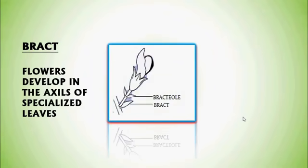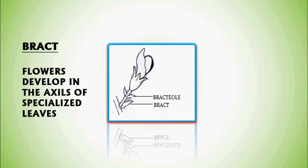Bract — flowers develop in the axil of specialized leaves called Bracts. In this photograph, observe that this part is called the Stem and this part of the flower is called the Pedicel or stalk of the flower. This Pedicel arises from the axil of the specialized leaf, which is called a Bract.